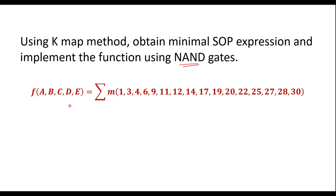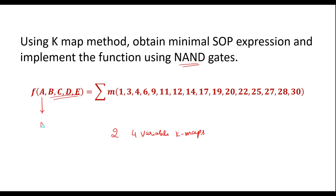This is a 5-variable function with variables A, B, C, D, and E. As we know, for 5-variable KMAPs we are supposed to use two 4-variable KMAPs. I will use B, C, D, E as variables for each 4-variable KMAP, and variable A — A equal to 0 for one KMAP and A equal to 1 for the other.